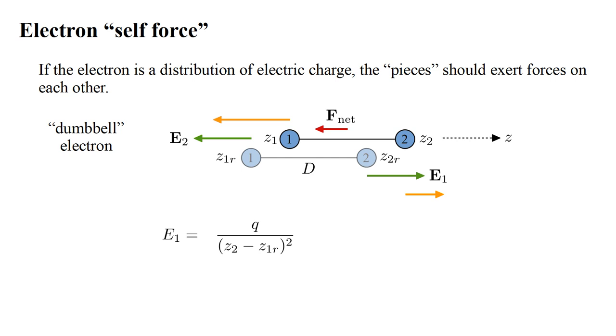If the electric field magnitude is charge over distance squared, and if each part has charge Q, E-one is Q over Z-two minus Z-one R squared, and E-two is minus Q over Z-one minus Z-two R squared. The minus sign indicates the field points to the left, in the minus Z direction.